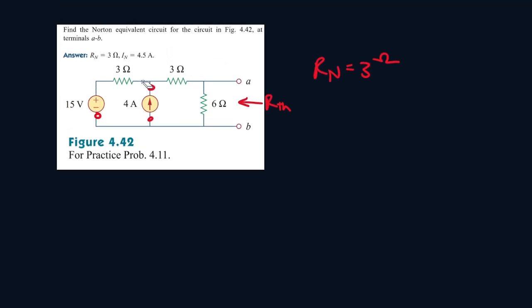Now let's find I Norton. To find I Norton, it will be the current passing through here, but the current passing through here is zero. But what we're gonna do is short circuit it first, and so that means the current passing through here is no longer zero because there's a wire here that we forcefully